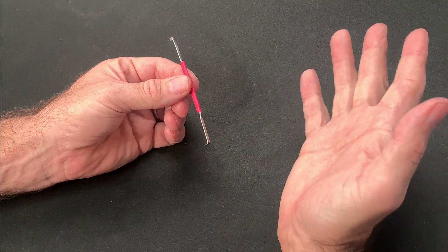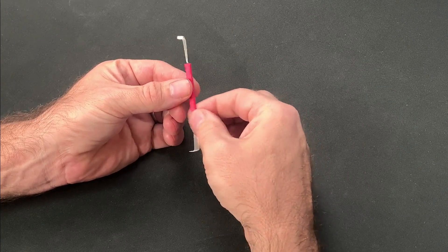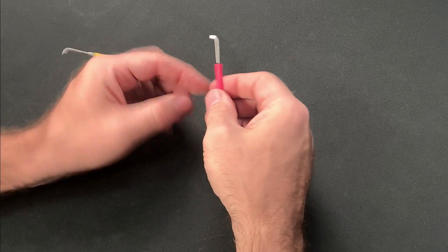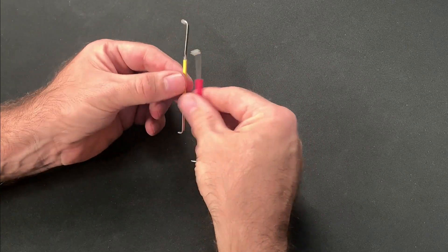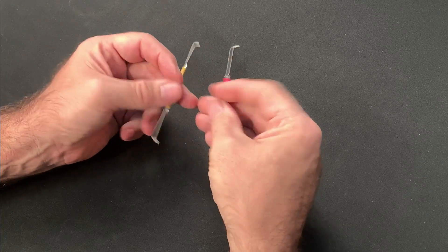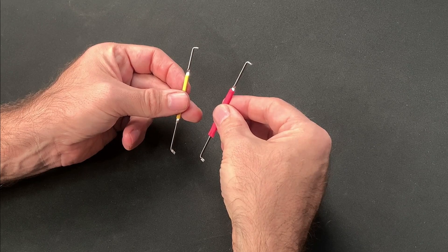Hi, this is Fish and welcome to Fishpicks. Since starting lock sport I've acquired quite a collection of tension wrenches, but these days I rarely use anything except this. The universal tension wrench devised by Chris Capoon. Today we'll be looking at why this little tool is so great and how you can make your own. So let's take a look.